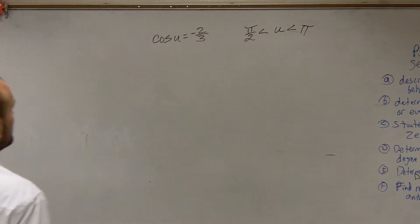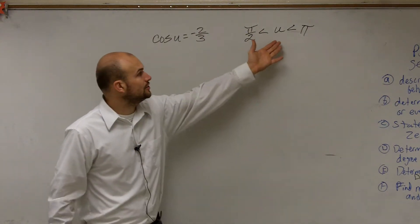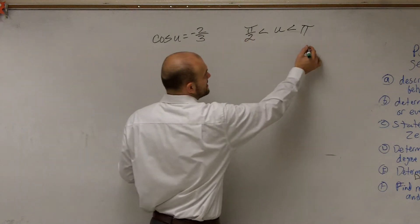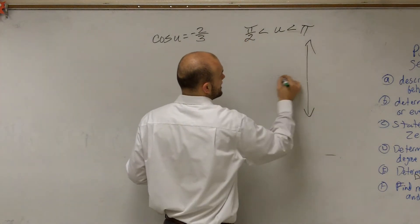Let's plot our quadrants. Right now we see my angle u has to be greater than π/2 but less than π. So let's take a look at where my triangle has to stand for that.